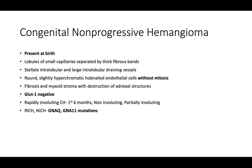You can have a rapidly involuting congenital hemangioma (RICH) in the first six months, or a non-involuting (NICH) or partially involuting variant. These RICHs and NICHs often have GNAQ and GNA11 mutations.